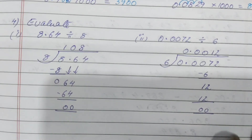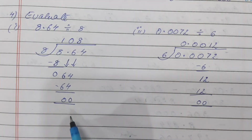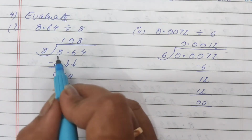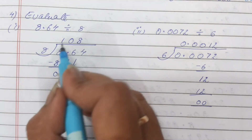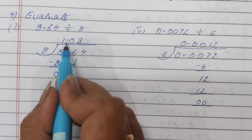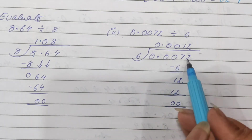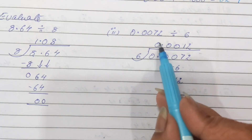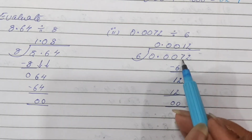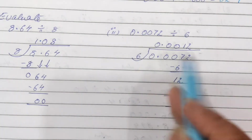Coming to question number 4 — dividing. You do the normal division. Make sure to put a decimal in the quotient after the number where the decimal appears. So after 8 it is coming — when I divided, 8 ones are 8, and I put a decimal in the quotient. For 0.0072 divided by 6: zero can't be divided so zero point comes, then again zero — nothing can be done. For 7 we start: 6 ones are 6, and 6 twos are 12.